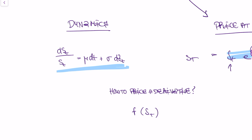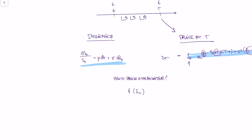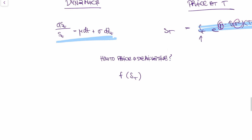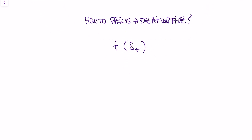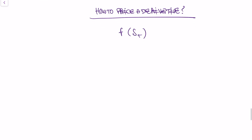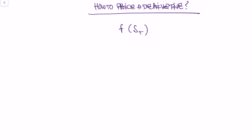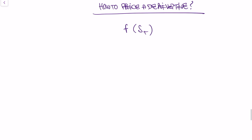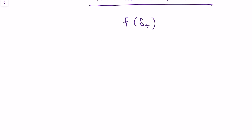So we have answered questions about the underlying financial asset. In the Black-Scholes model, we're interested in pricing not the asset itself, but a derivative of the asset — a payoff function dependent on the asset. If we want to start pricing anything, there are two approaches: risky pricing and risk-neutral pricing. We're going to take the approach of risk-neutral pricing.